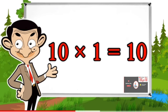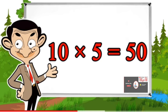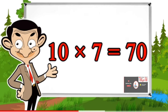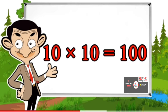Table of 10: 10×1=10, 10×2=20, 10×3=30, 10×4=40, 10×5=50, 10×6=60, 10×7=70, 10×8=80, 10×9=90, 10×10=100.